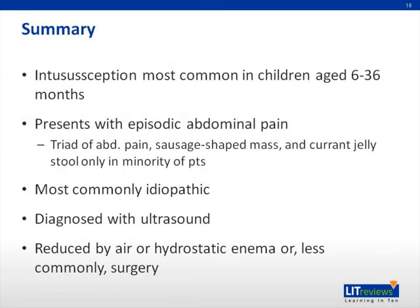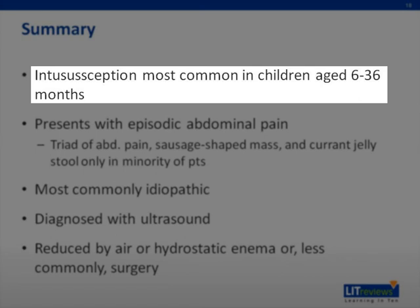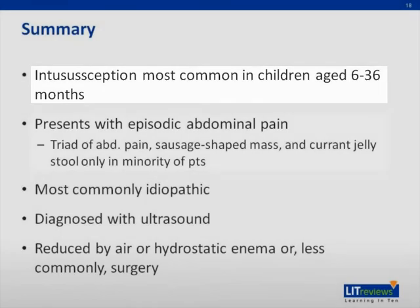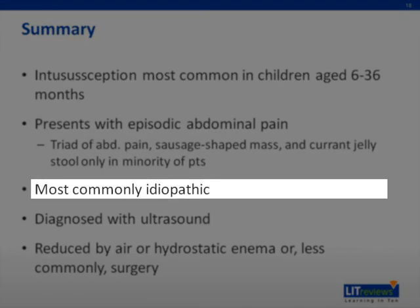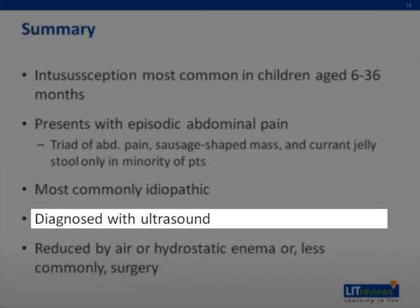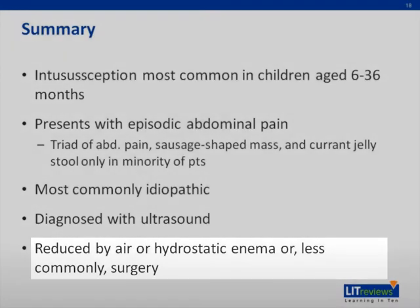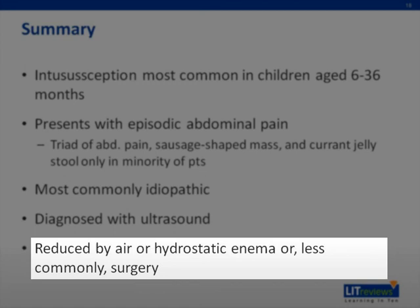In summary, intussusception occurs most commonly among children aged 6 to 36 months and presents with episodic abdominal pain. The classic triad of abdominal pain, a sausage-shaped abdominal mass, and currant jelly stool is present in only a minority of patients. The cause is most often idiopathic, although the risk of pathologic causes increases with age. The preferred diagnostic modality is ultrasound, and intussusception is generally treated with air or hydrostatic enema, but surgery may be required in certain cases.